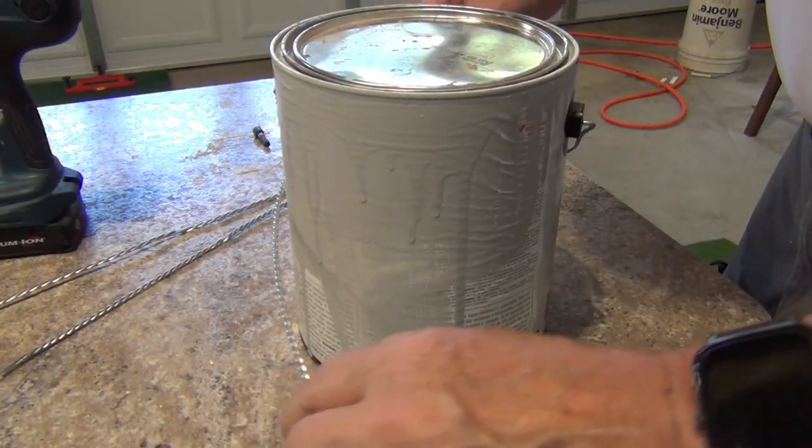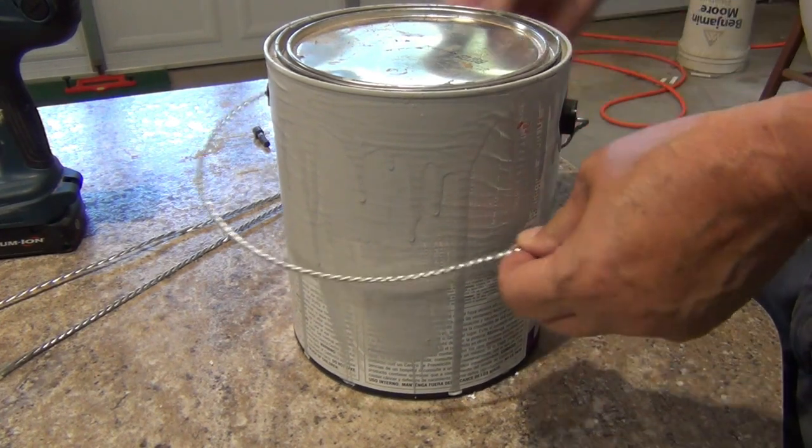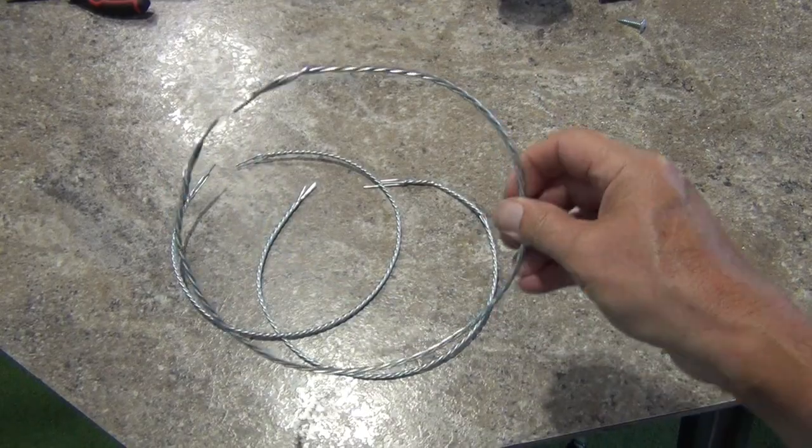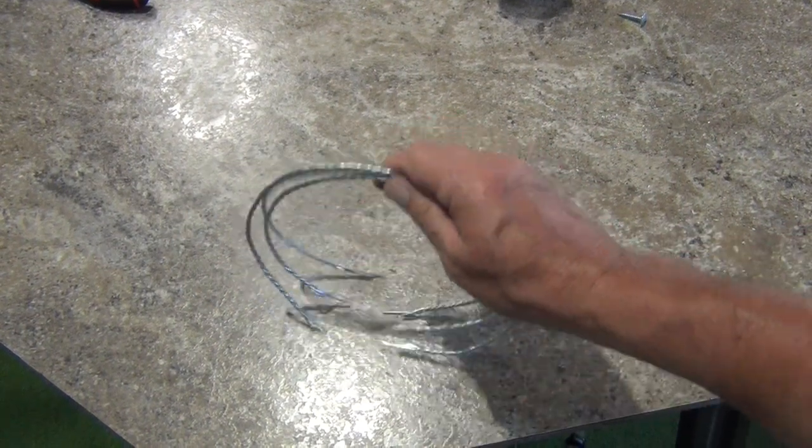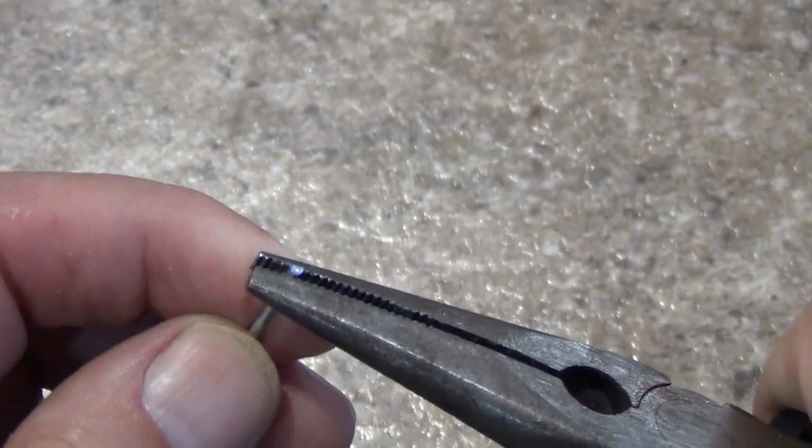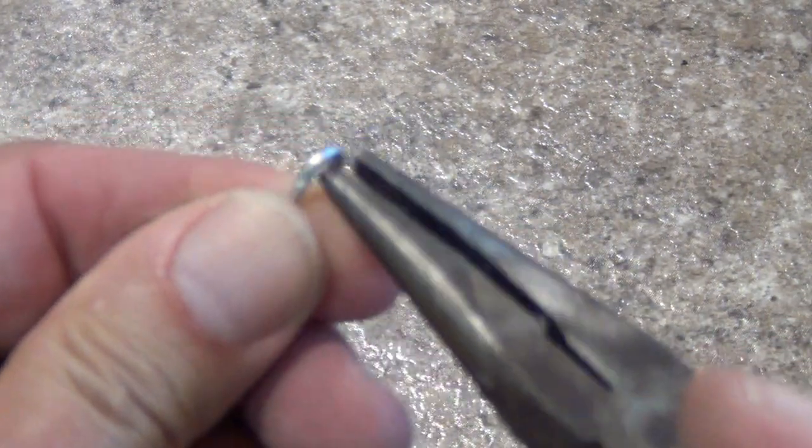Using a one gallon paint can, start forming each of the elements into a hoop. Use your hands to finish shaping them. Try to make as close to a circle as possible. Using the tips of a pair of needle nose pliers, bend the ends of each cable into a terminal hook.